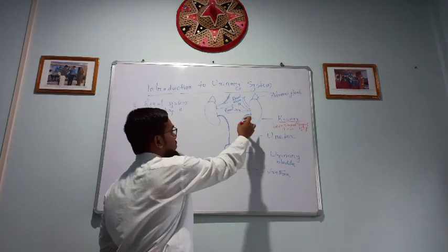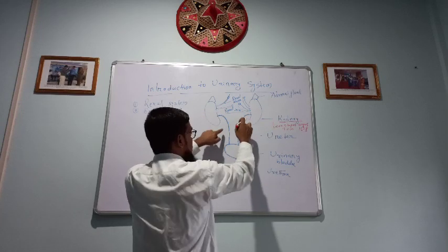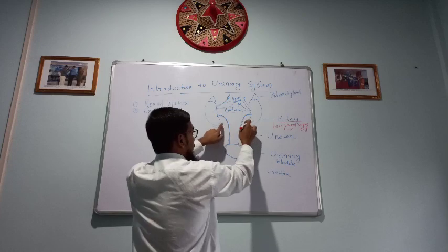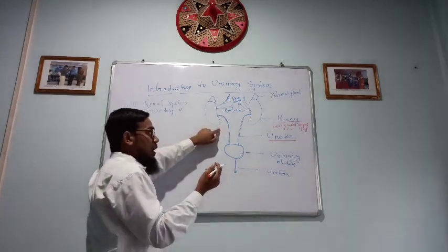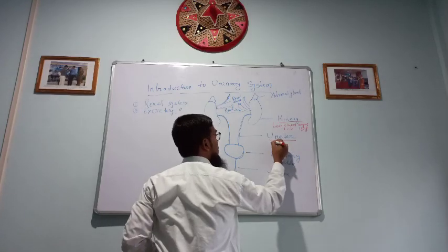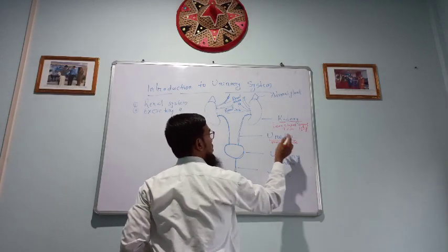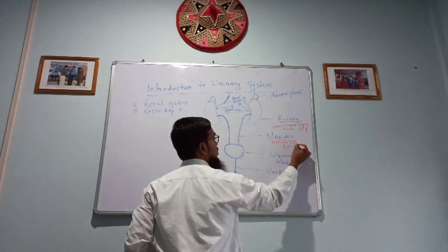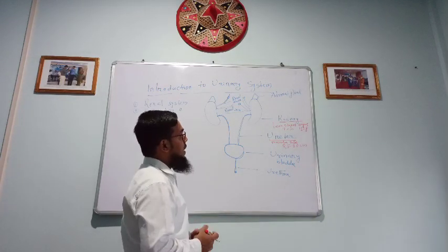From the kidney, whatever the urine forms will come to the urinary bladder for storage. These are called ureters. So what is ureter? Ureters are nothing but muscular tubes. It is about 25 to 30 cm in length in case of adult person.